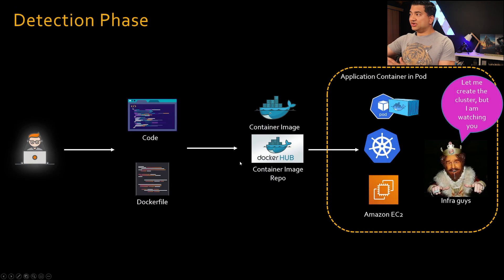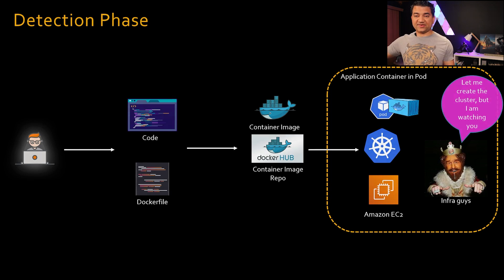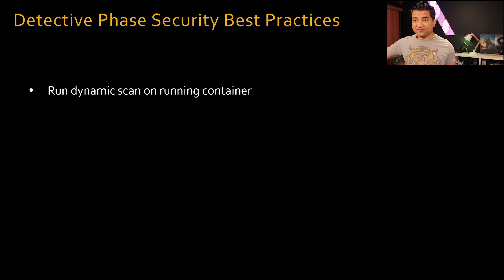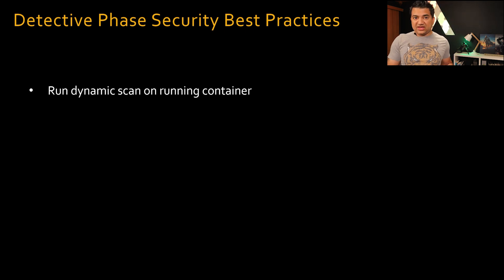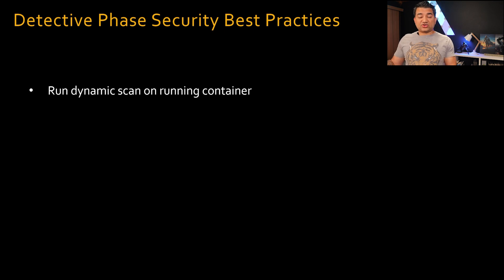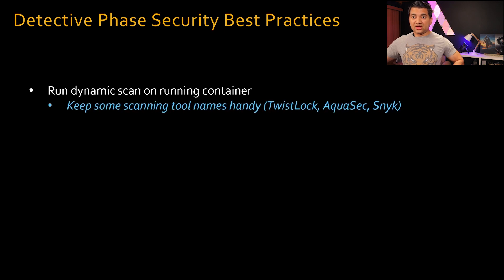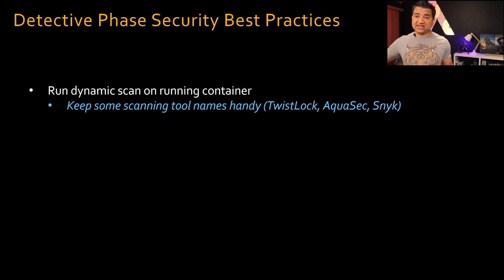Moving on to the detection phase — 'I am watching you' from the infrastructure group. The detection phase security best practice is to run dynamic scans on running containers. You did the static scan on your container image earlier, but after you deploy it, new vulnerabilities may emerge. So you must run scans on running containers to find those. This is highly recommended — make sure you mention it in your interview. Keep scanning tool names handy, such as Twistlock, Aquasec, Snyk, etc.